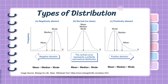So here are the types of distributions. For symmetric distribution, the mean is approximately equal to the median and the mode, and it shows a curve that is perfectly symmetrical. Whereas the two asymmetrical distributions are negatively skewed and positively skewed. For negatively skewed distribution or skewed to the left, the mean is less than the median and the mode. While with positively skewed distributions or skewed to the right, the mean is greater than the median and the mode.